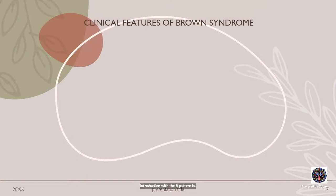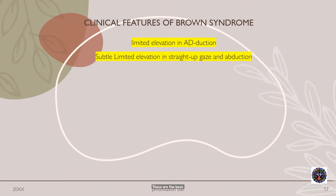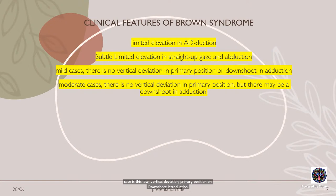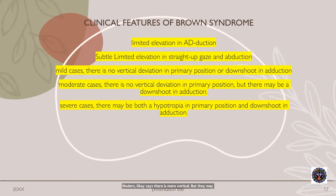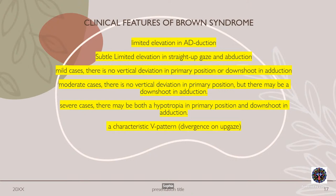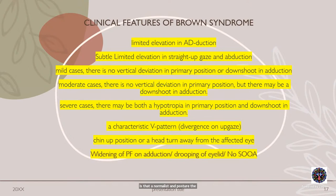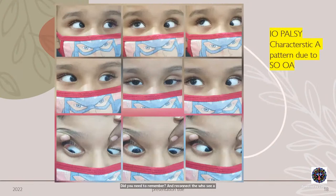How do patients present? Mild cases: limited elevation in adduction, no vertical deviation in primary position, no downshoot in adduction. Moderate cases: no vertical deviation in primary position, but may have a downshoot in adduction. Severe cases: both hypotropia and downshoot in adduction. There is a characteristic V pattern — divergence on up-gaze. Chin-up posture or head turn away from the affected eye. Widening of palpebral fissure in adduction, drooping of the eyelid, but no superior oblique overaction.